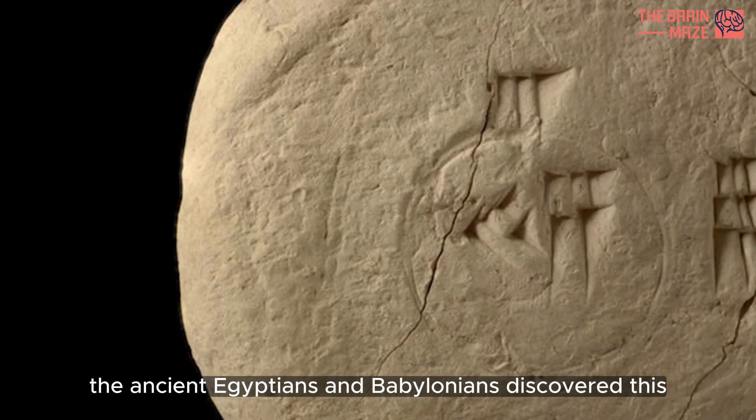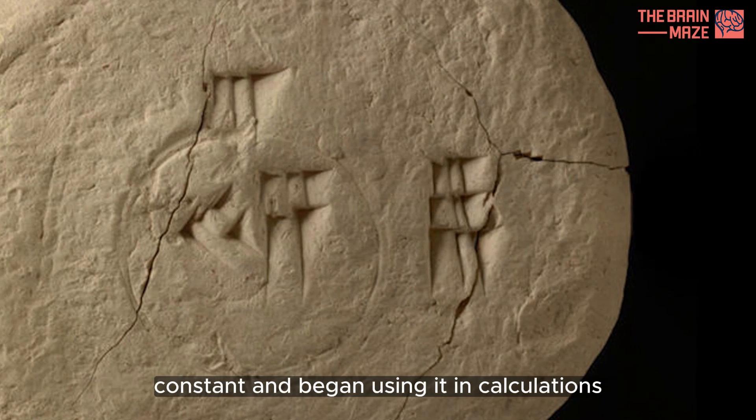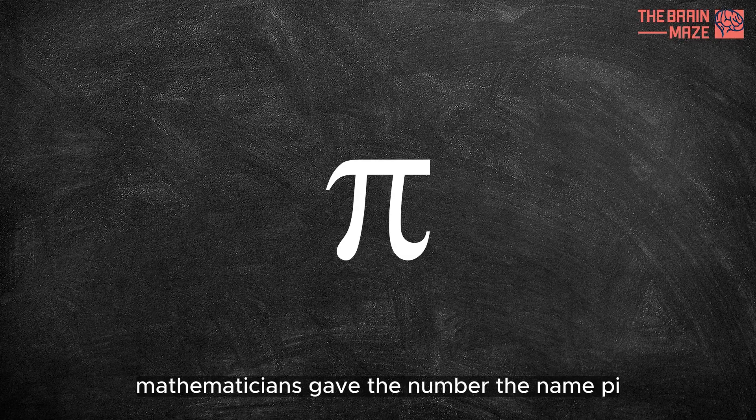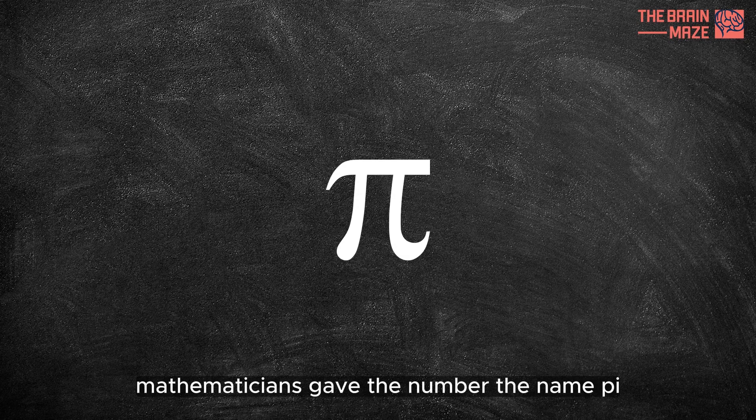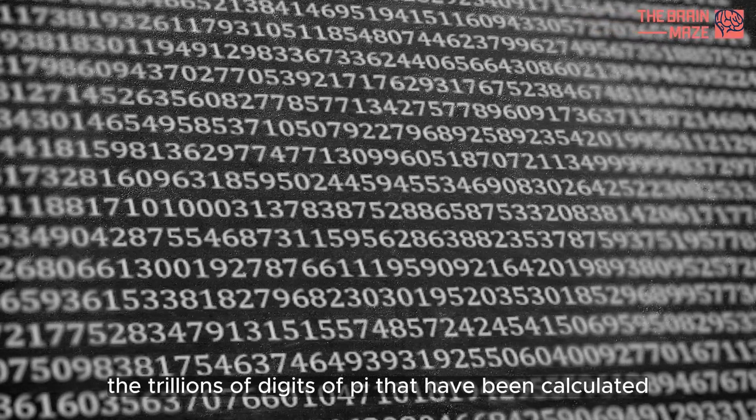The ancient Egyptians and Babylonians discovered this constant and began using it in calculations more than 4,000 years ago. Mathematicians gave the number the name Pi in the 18th century. There is no pattern to be seen in the trillions of digits of Pi that have been calculated.